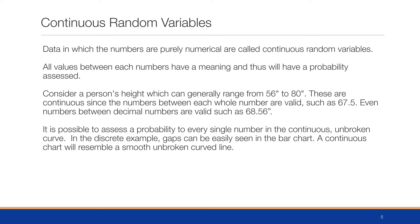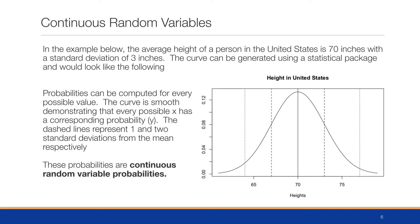In the discrete example we saw breaks in the bar chart. A continuous chart will resemble a smooth unbroken curved line. In the example below, the average height of a person in the United States is 70 inches with a standard deviation of 3 inches. The curve can be generated using any statistical package. Probabilities can be computed for every possible value. The curve is smooth, demonstrating that every possible x has a corresponding probability denoted by the y-axis. The dashed lines represent those standard deviations, the spread around that center line. These probabilities are called continuous random variable probabilities.